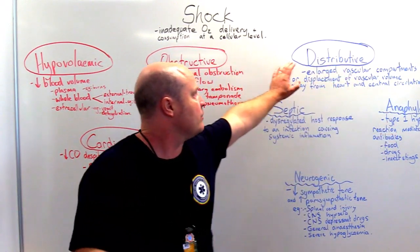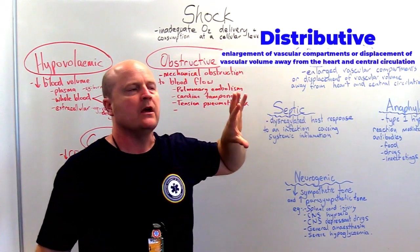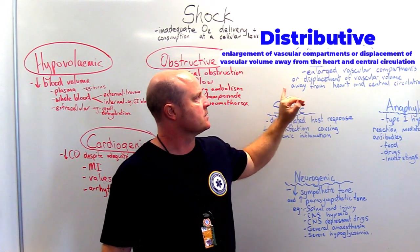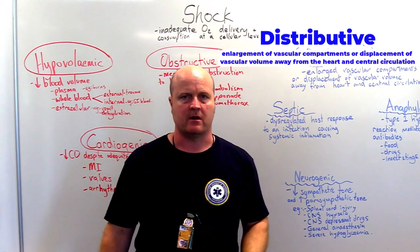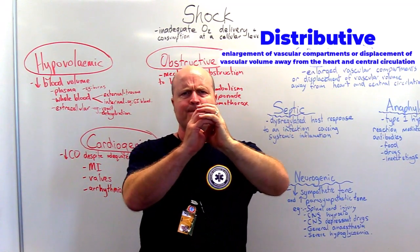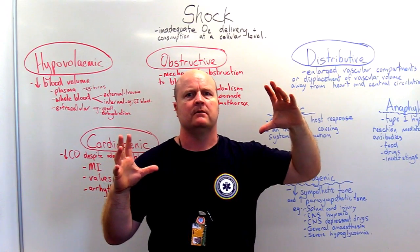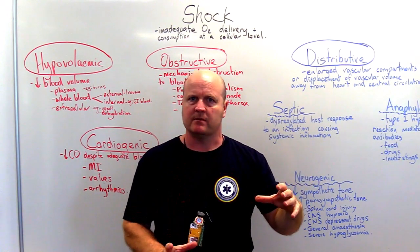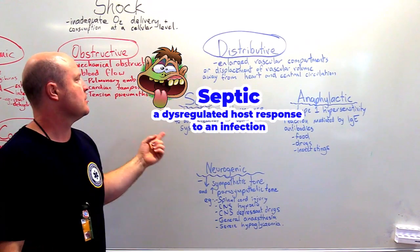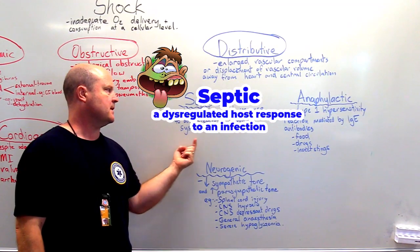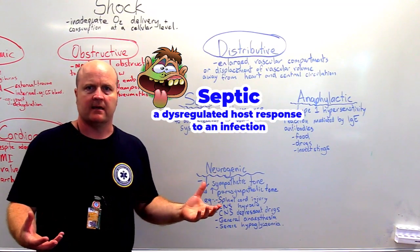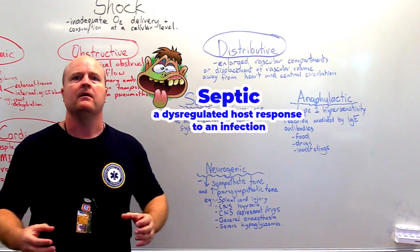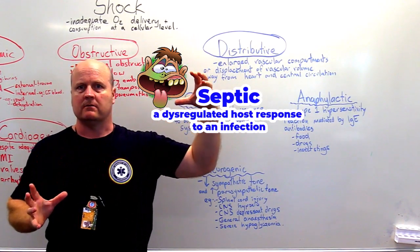Then on this side we've got distributive shock. With distributive shock, we've got three types. What distributive means is we have an enlarged vascular compartment or displacement of vascular volume away from the heart and central circulation — basically a massive amount of vasodilation. If our pipes get way too big, we don't have enough blood volume to fill all our pipes. So we've got septic shock — a dysregulated host response to an infection causing systemic inflammation. We have an infection that our body overreacts to, we get inflammation everywhere, and as part of that, a huge amount of vasodilation. Distributive shock.